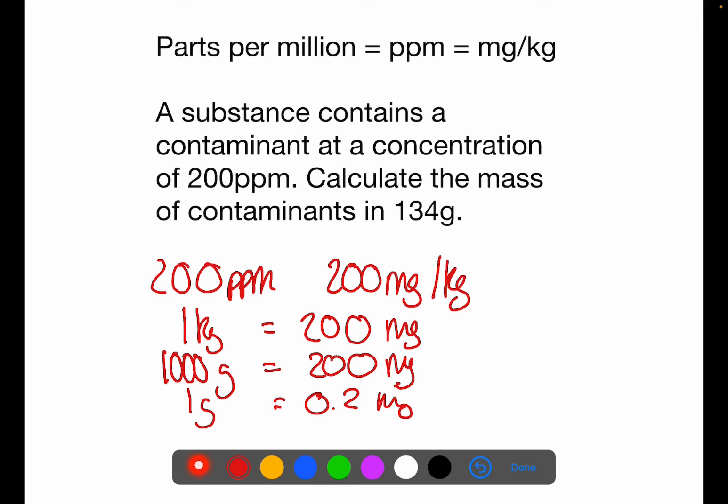We don't have one gram, we have 134. So we're going to multiply up and this means that you'll have 26.8 milligrams of the contaminant. Most of these calculations involve doing this sort of proportional calculation.